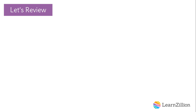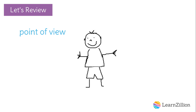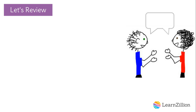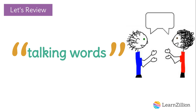Let's review what you already know about point of view. A character's point of view is what he or she thinks and feels. A character's point of view is often determined by paying attention to his or her talking words. Talking words are when characters in a story say something, whether it is to another character or themselves. Those talking words are usually wrapped around quotation marks. Noticing these quotation marks helps you identify when a character is saying something.